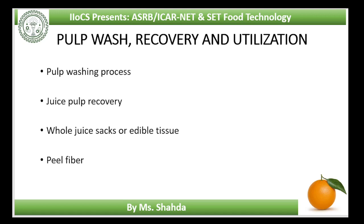Juice pulp recovery: during juice recovery, the juice contains part of the ruptured juice vesicles or floating pulp, which is recovered as a by-product. The juice first goes to a paddle finisher to remove seeds and rag. Then the pulpy juice passes to a conical cyclone separator called a hydrocyclone to remove embryonic seeds and other defects. The pulpy juice comes out at the top of the hydrocyclone and goes to a pasteurizer and again to a finisher screen for separation of pulp and juice. This pulp is used for blending in juice concentrates.